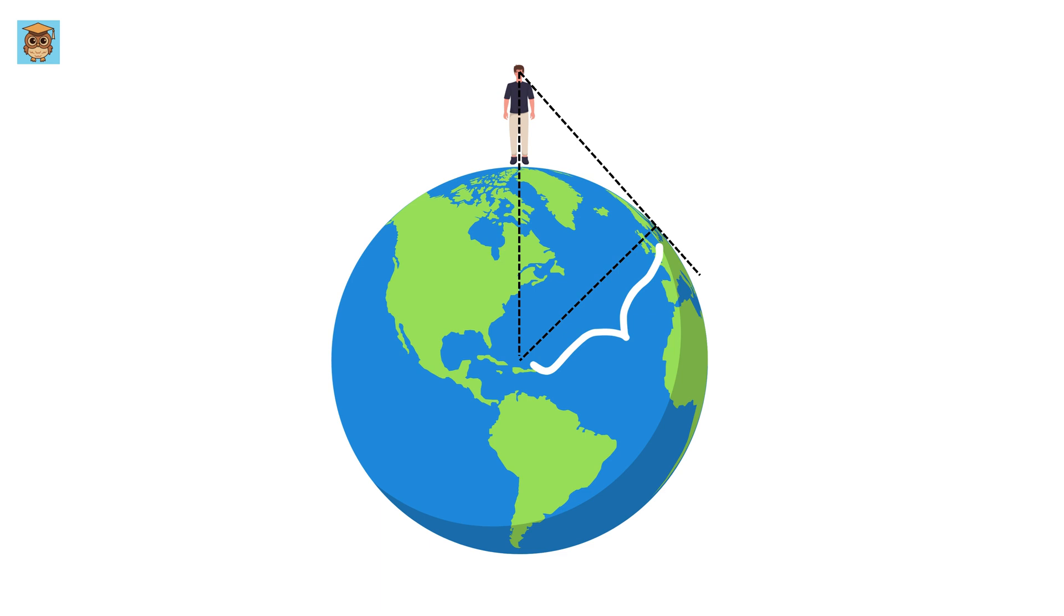And the third side is this one, which is simply the Earth's radius, because the horizon is on the Earth's surface. Since this is the tangent line and this is the radius, therefore this angle will be the right angle.